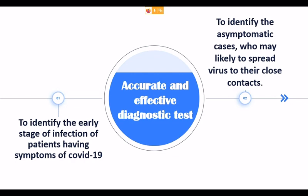Number two, your test should also have the ability to identify asymptomatic cases, because these asymptomatic cases may likely spread the virus to their close contacts. We don't know for certain whether asymptomatic cases can spread the virus, but in the present scenario we should be able to diagnose them, as there are all chances for them to spread the virus to their contacts.